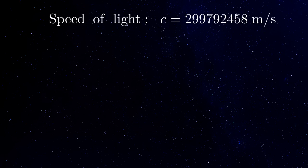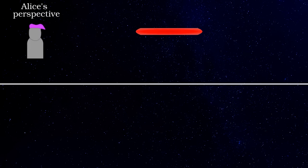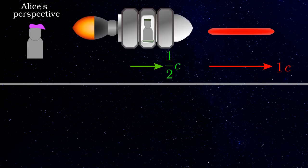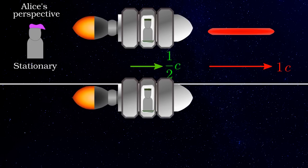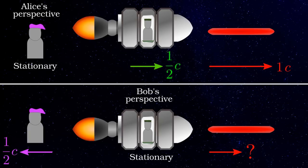One of its postulates is that the speed of light is the same for all observers. This is actually very strange. Imagine if Alice flashes a laser beam which moves away from her at the speed of light, while Bob is on a spaceship going at half the speed of light in the same direction.